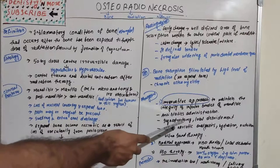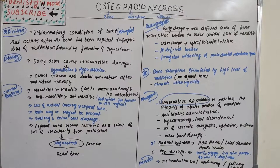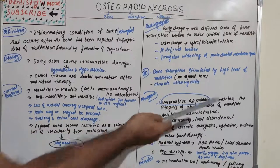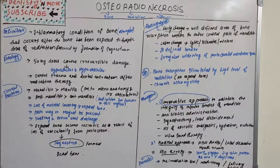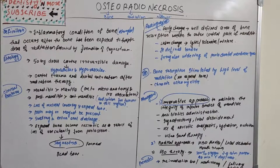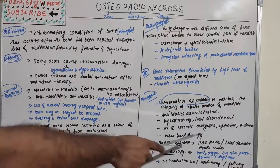In the conservative approach, the goal is to maintain the integrity of the inferior border of the mandible. We administer antibiotics to control infection, perform sequestrectomy — removing the dead or necrotic bone — and also perform local debridement. To control pain, narcotic analgesics can be used, along with proper hydration, nutrition supplementation, and ultrasound therapy.